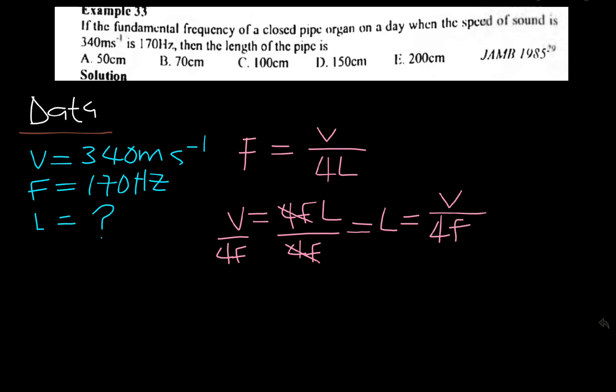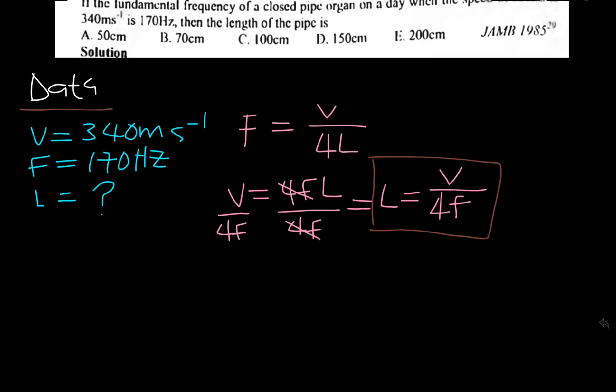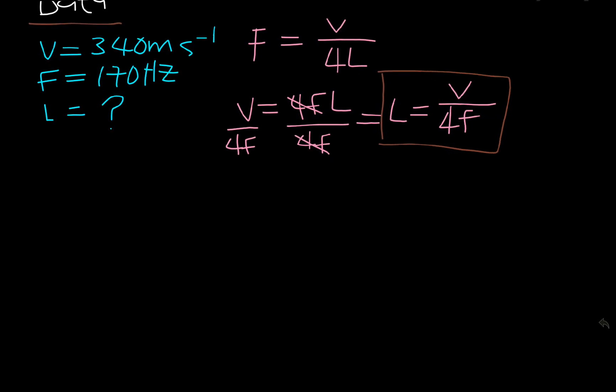This is what we are going to use. Next, we just need to plug in our data. L equals V, which has been given to be 340, over 4 times 170. That's 680. Check with a calculator, you get 680. And this is 340 divided by 680, which gives 0.5.